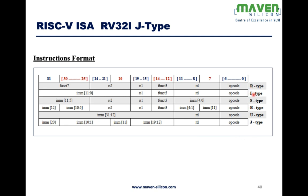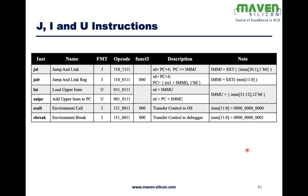We have seen R-type, I-type, S-type, and B-type. Now let's look at J-type and then U-type. There are still some more instructions: JAL of J-type, JALR (Jump and Link Register) which is of I-type, and then instructions like Load Upper Immediate (LUI), Add Upper Immediate to PC (AUIPC), environment call, and environment break. Those cover I-type, U-type, and J-type instructions.